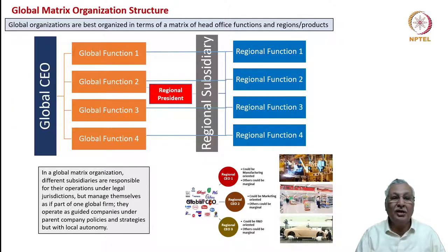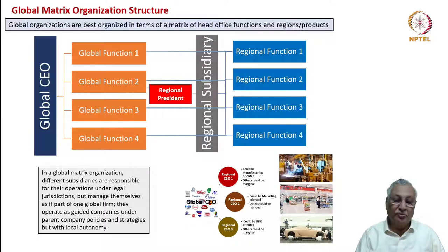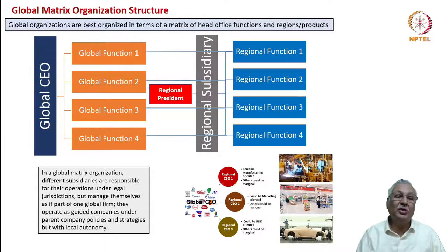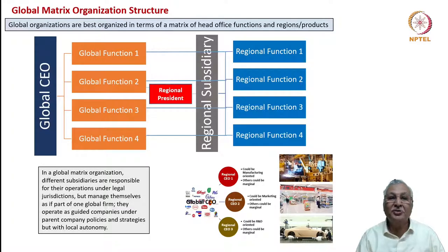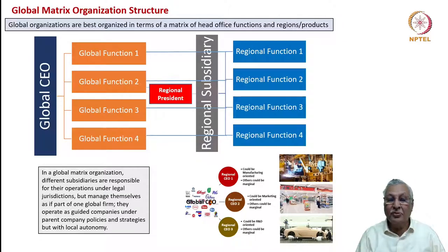In a global matrix organization, a global CEO handles global functions while a regional president handles regional functions. The regional president is responsible for the regional subsidiary, whereas the global CEO is responsible for several such subsidiaries bound together through regional president relationships. Different subsidiaries are responsible for their operations under legal jurisdictions but manage themselves as part of one global firm, operating as guided companies under parent company policies.